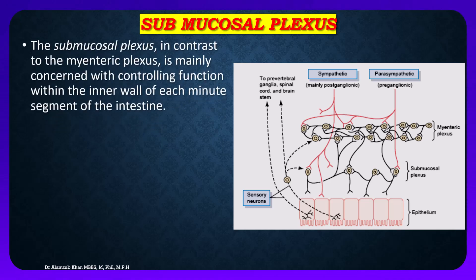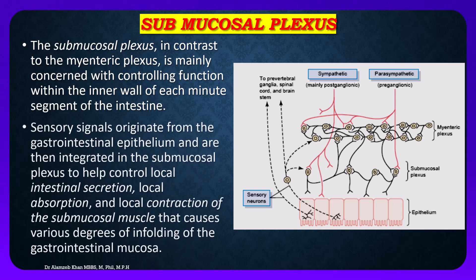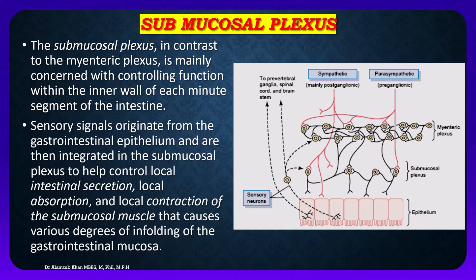The submucosal plexus, in contrast to the myenteric plexus, is mainly concerned with controlling functions within the inner wall of each minute segment of the intestine. Sensory signals originate from the gastrointestinal epithelium and are then integrated in the submucosal plexus to help control local intestinal secretion, local absorption, and local contraction of the submucosal muscle.